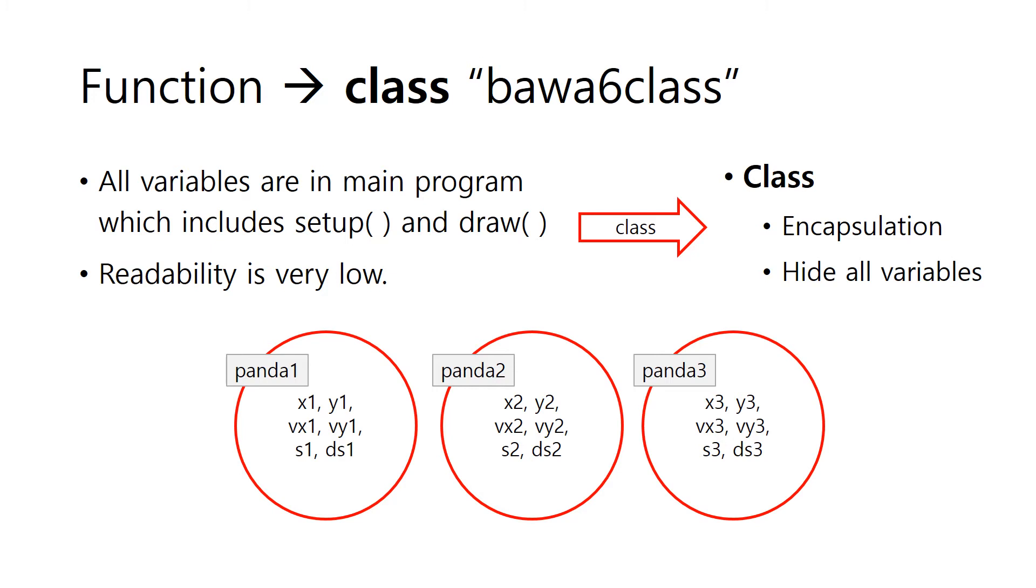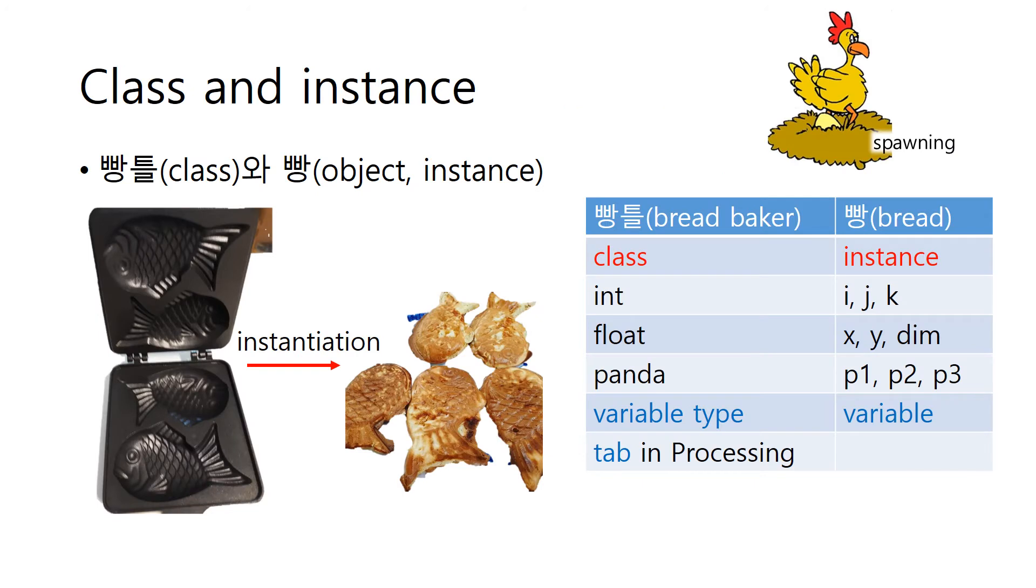The concept introduced is class. In class, variables that are commonly used are grouped and operated as a single bundle. Here we have bundles of six values for each panda. And the various complex variables are hidden. What makes them in a bundle is called encapsulation. That means putting many things in one capsule. All variables are hidden inside the capsule.